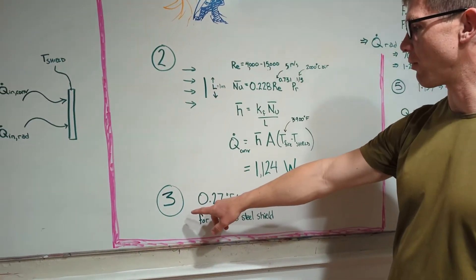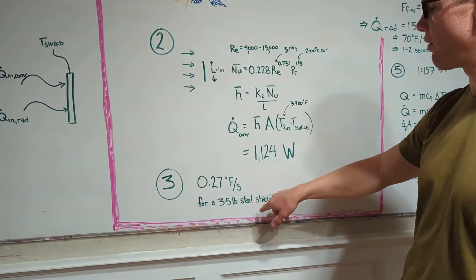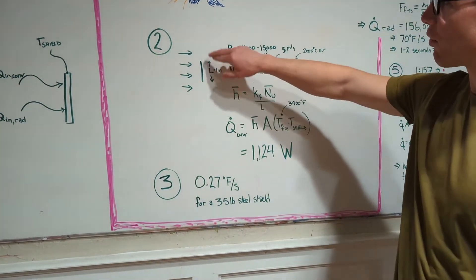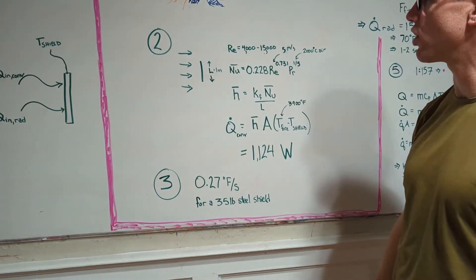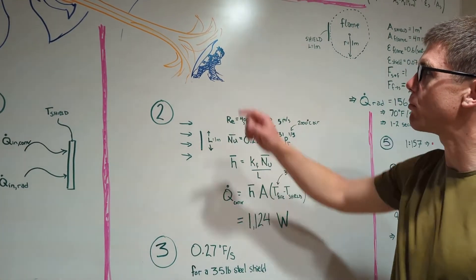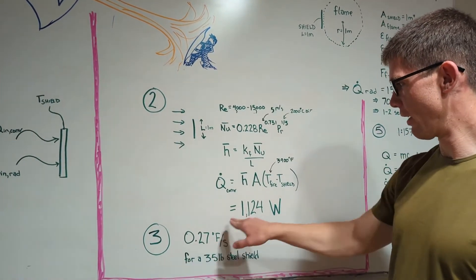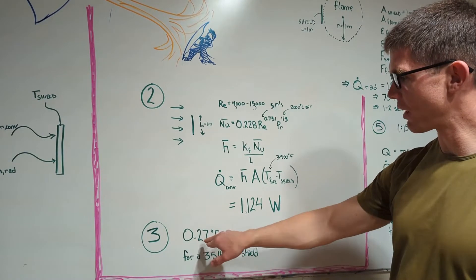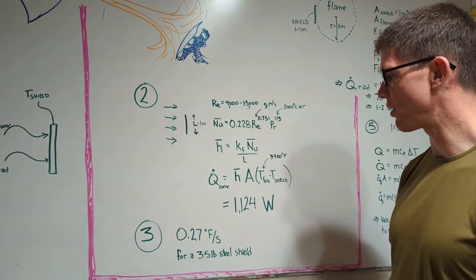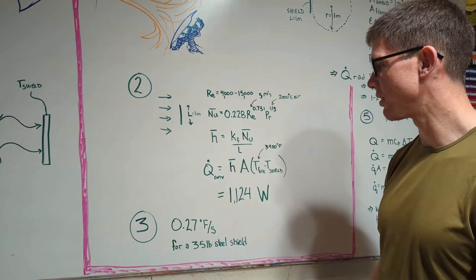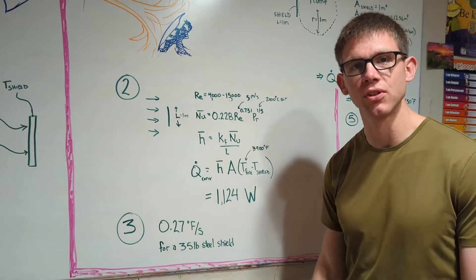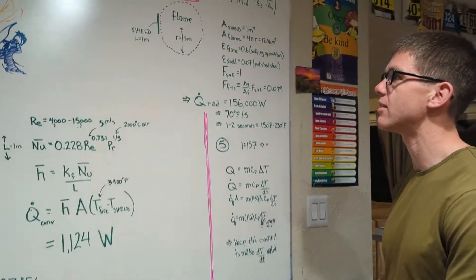Third post we looked at what would that actually do to a 35 pound shield. We assumed we had a one meter shield for ease of math and also so that it might be big enough for a knight to hide behind. Well 1124 watts only heats up that shield by about 0.27 degrees Fahrenheit every second. So it would take about six minutes for that shield to get too hot to hold. So so far knight seems in pretty good shape.